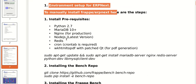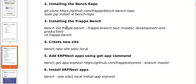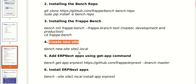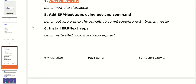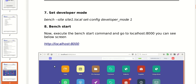Install the site, install the bench repo, create a new site, get apps, install the ERPNext apps, set the developer mode, and after that start the bench. After that use the start command to start our server.